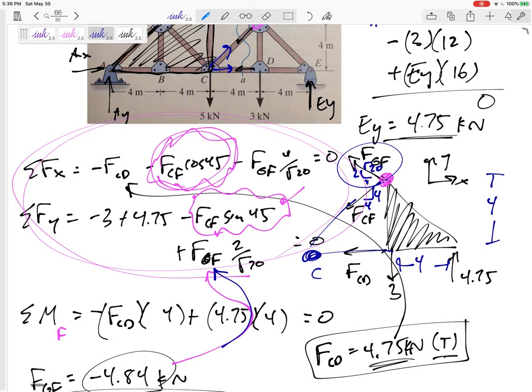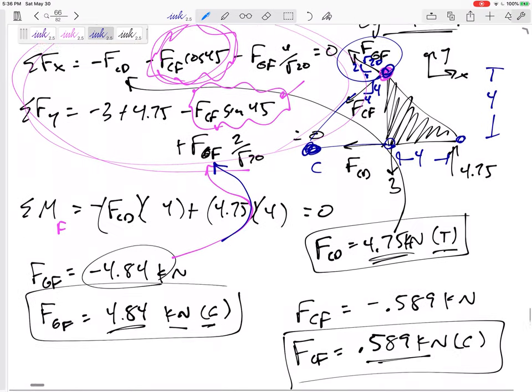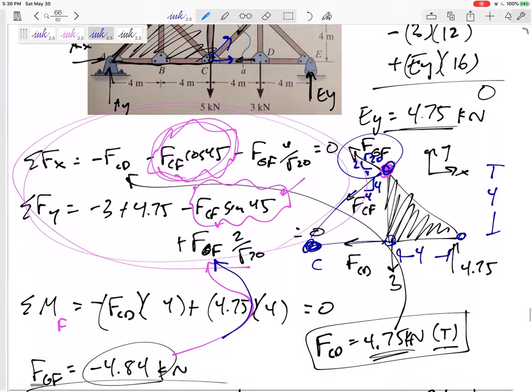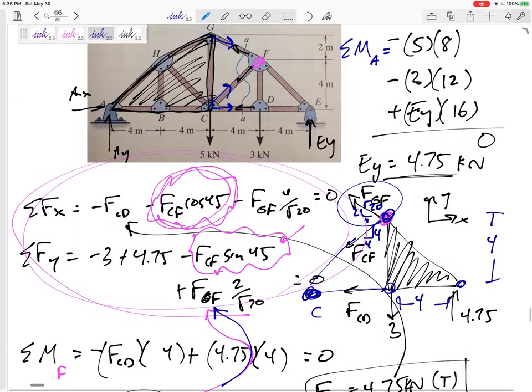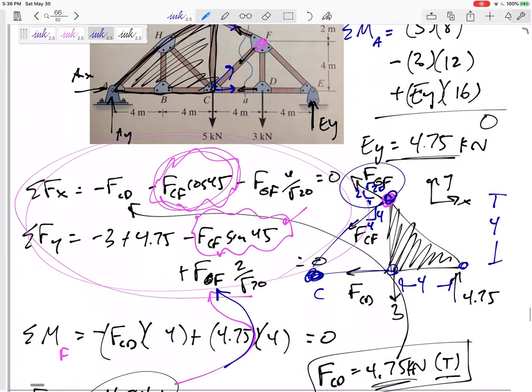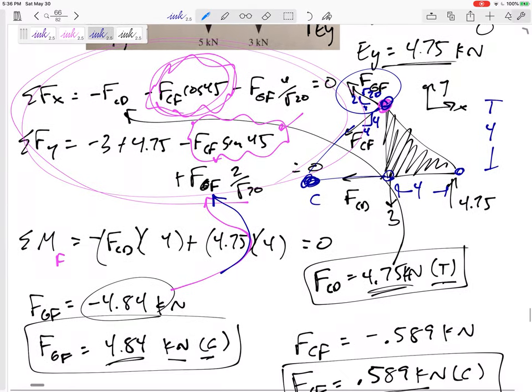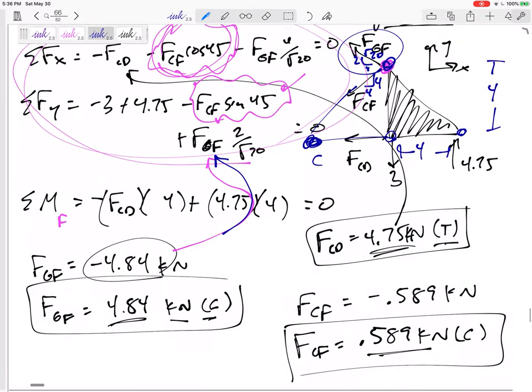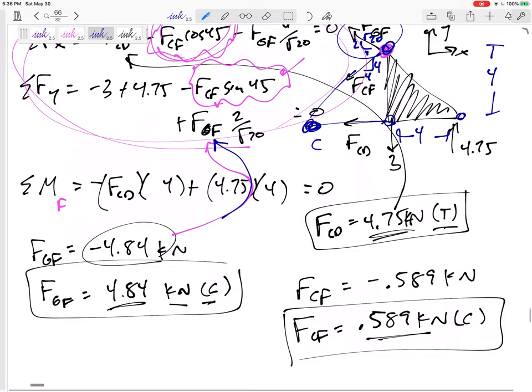So you can sum your moments about any point that you want. Some will make the math easier than others, right? Method of sections: look at the whole free body diagram, solve for some things, cut it, and look at one half or the other, throw away the other half that you're not looking at. Look at one half, draw those forces that you cut through. I like to draw them in tension to begin with. And if my answer comes out negative, then those ones were in compression. All right.